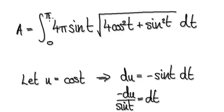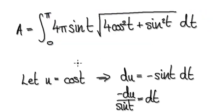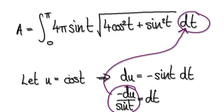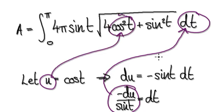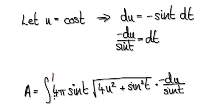So now we need to — well, this is quite hard to integrate, so we're going to use substitution. Let u equal cos of t. So if u equals cos of t, then du equals minus sine t dt, and then rearrange it to make dt the subject. We can now put this into the integral, and the u here we can put in as u squared.